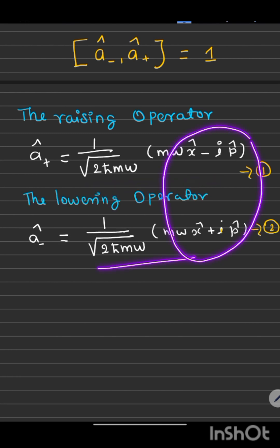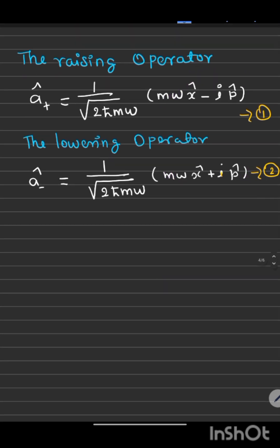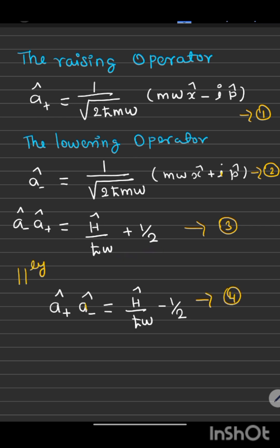Both are conjugate to each other and the product of lowering and raising operator you can express in terms of the Hamiltonian of harmonic oscillator as this form and similarly the product of raising and lowering operator is this form.